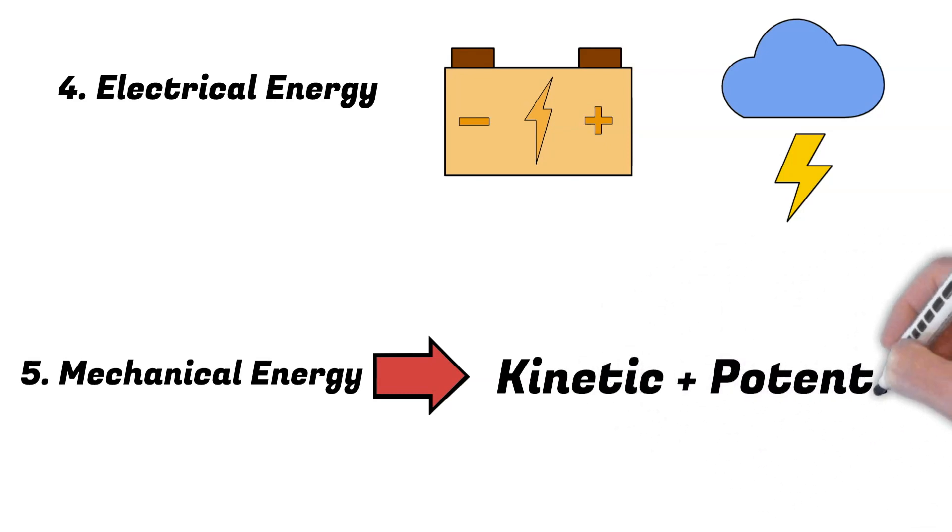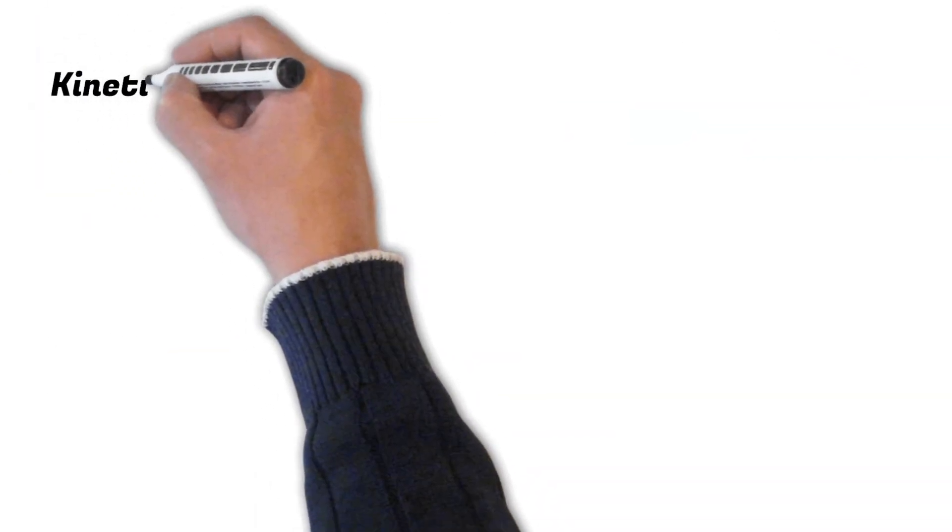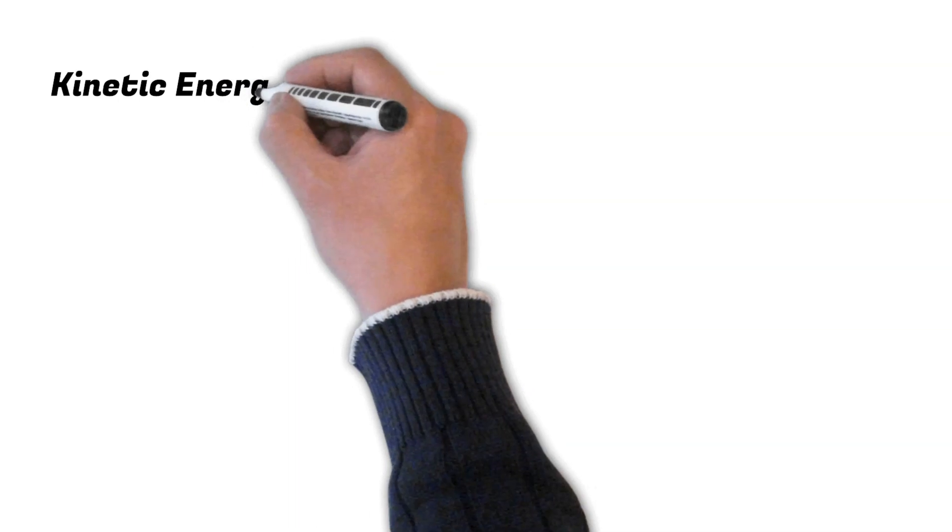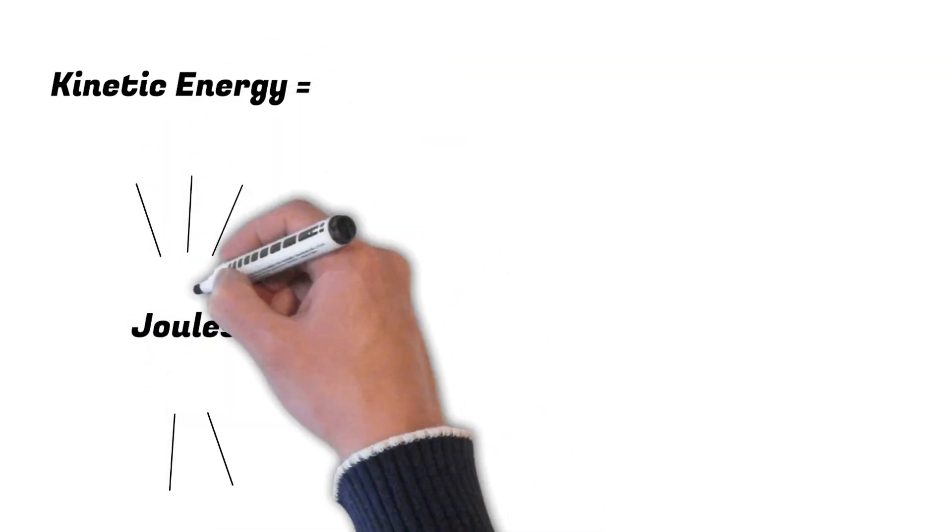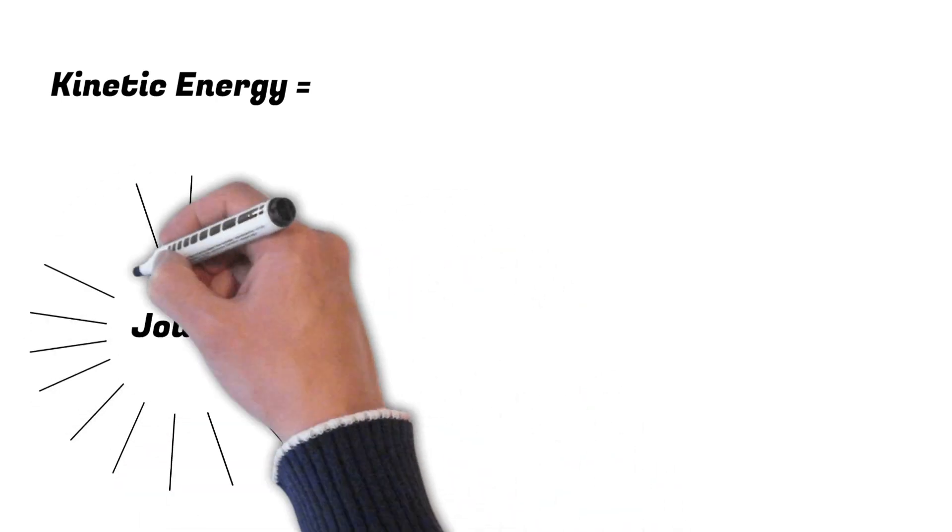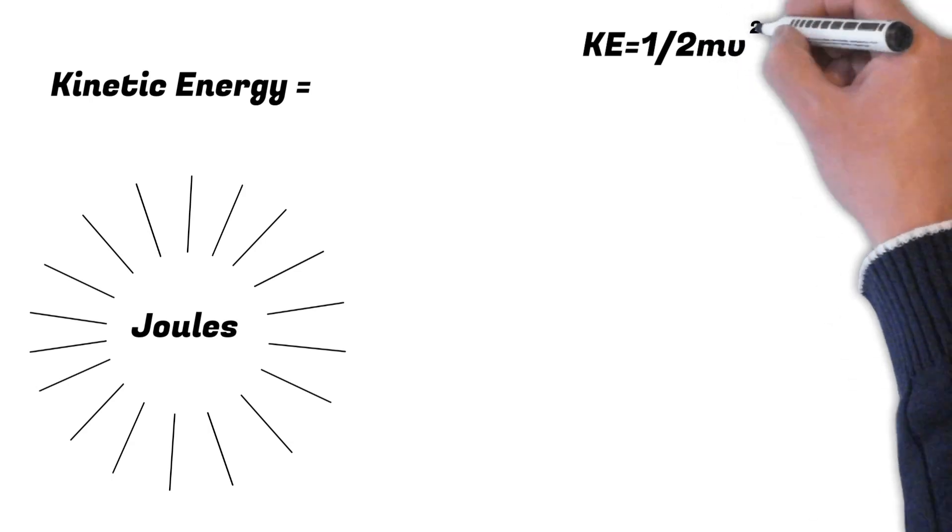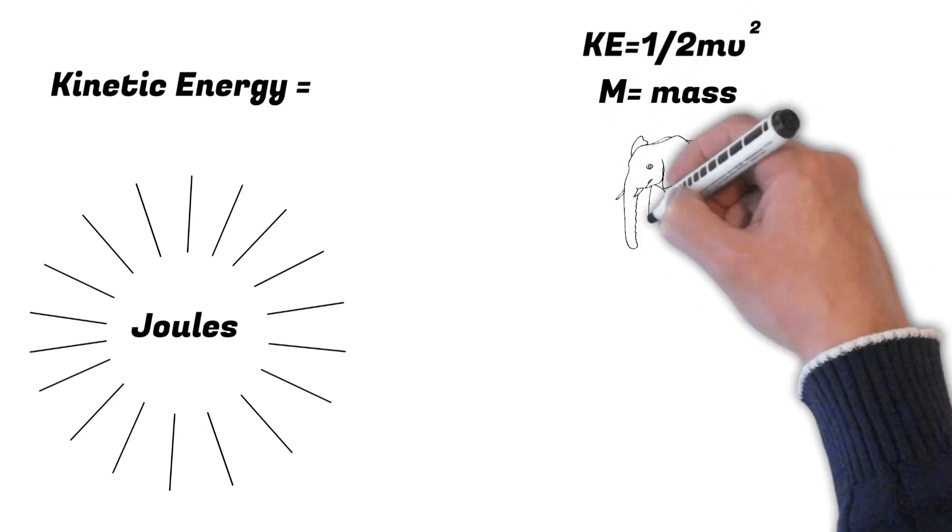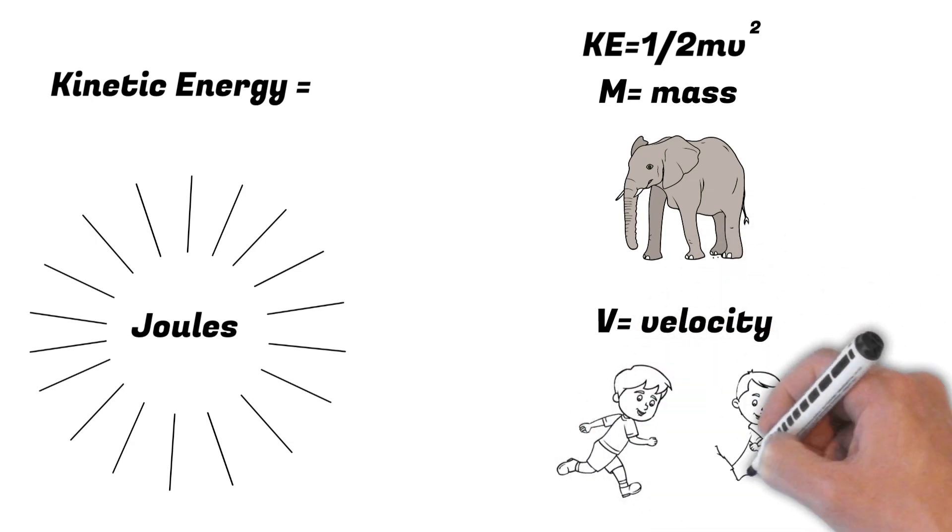We measure energy in joules. The equation to determine how much kinetic energy something has is one half m times v squared, where m equals mass and v equals the object's velocity.